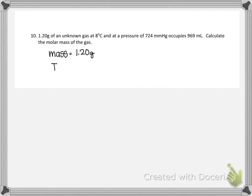I have a temperature of 8 degrees Celsius, so if I add 273, that would be 281 Kelvin. I have a pressure of 724 millimeters of mercury and a volume of 969 milliliters, and it wants me to calculate molar mass.